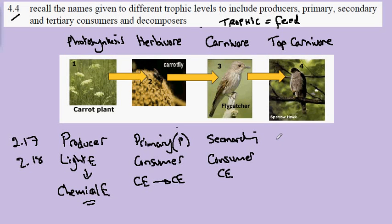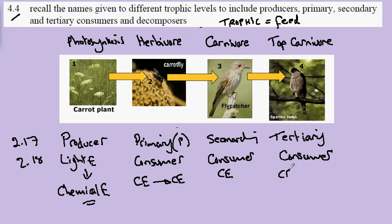The next feeding level is called tertiary. The secondary consumer takes in the molecules from the flycatcher and turns them into molecules suitable for the sparrowhawk, so chemical energy is being turned into chemical energy once more.